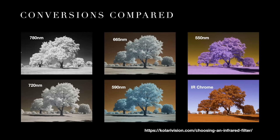Let me compare the conversions visually. Starting upper left at 780 nanometers: you get pretty much black and white — strong white foliage, white leaves and grass, dark black skies. Moving to 720 nanometers, there's a little bit of color seeping into the sky, looking slightly orange. At 665 nanometers there's more color; at 590 nanometers the leaves aren't white anymore — they're more cyan. By 550 nanometers you get purple leaves. Then there's the IR Chrome filter, which gives you essentially blue skies and red foliage. Just set the white balance and that's what you get.